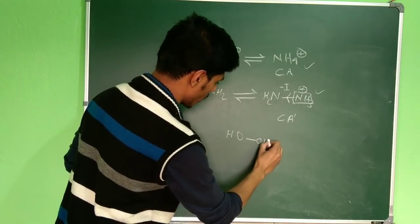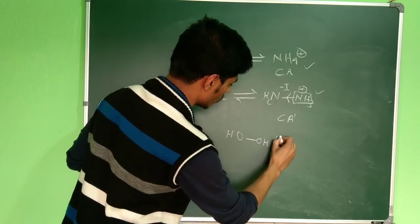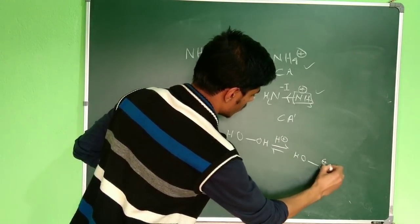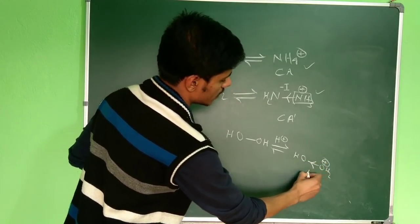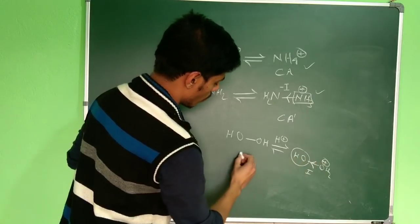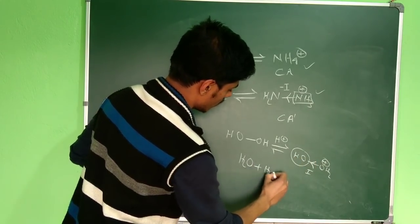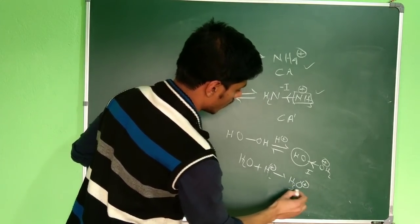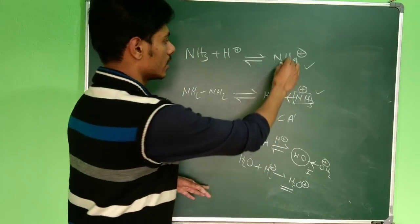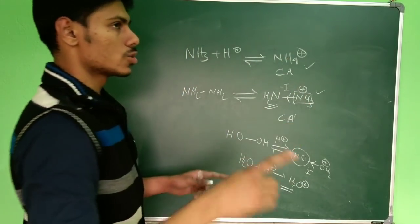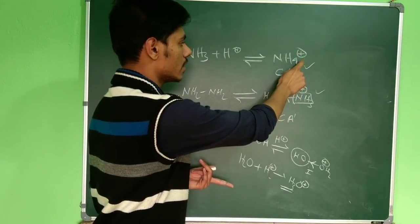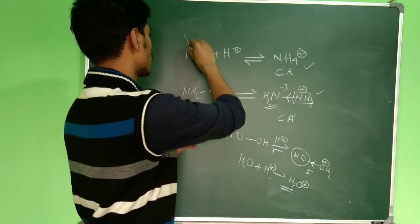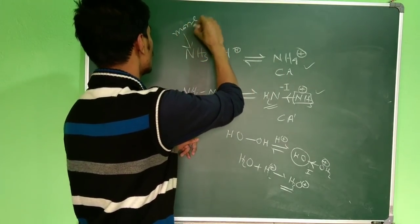The same logic applies to hydroperoxide: if hydroperoxide takes a proton it forms OH–OH₂⁺, where the positive charge is destabilized by the −I effect of the adjacent OH group. Whereas for water forming H₃O⁺, there is no such destabilizing effect. So H₃O⁺ is much more stable than OH–OH₂⁺, and NH₄⁺ is much more stable than N₂H₅⁺ — a more stable conjugate acid means a more basic parent compound.